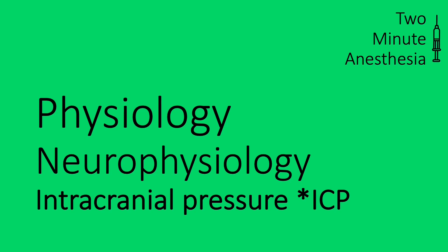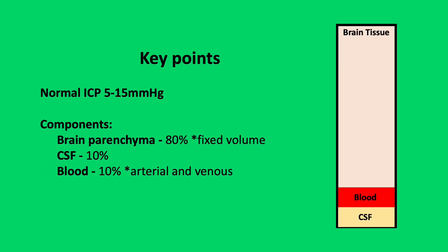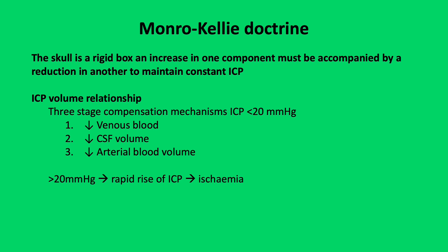2-Minute Anesthesia: ICP. The normal ICP varies between 5 and 15 mmHg, and this is very dependent on posture. There are three key components within the skull: brain parenchyma, which accounts for 80%, and blood and CSF, which account for 10% each. The Monroe-Kellie doctrine states that the skull is a rigid box, and an increase in one component — for example, blood — must be accompanied by a reduction in another to maintain a constant ICP.